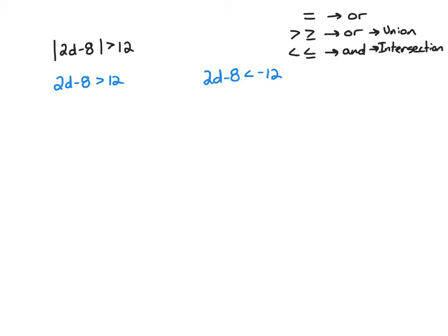We start with positive 12 and turn it into negative 12. Whenever I multiply by negative 1 to go from 12 to negative 12, my symbol — my greater than — also has to reverse into a less than. So to recap: two numbers are 12 places away from 0, that's 12 and negative 12. Since we're multiplying by negative 1, I have to reverse my sign from greater than to less than. Then I just solve both inequalities like a single inequality.